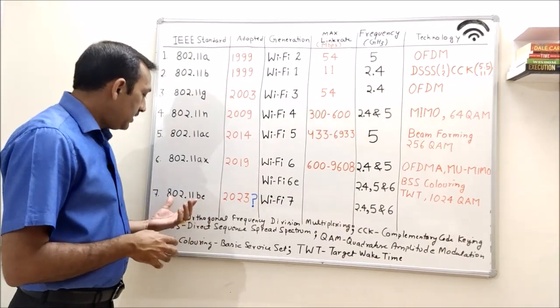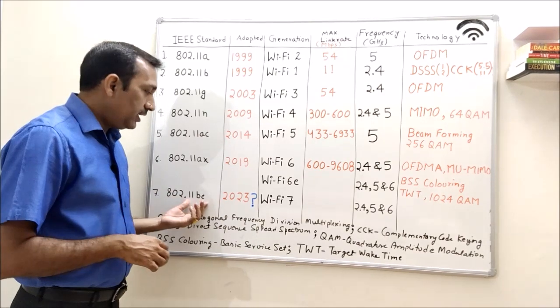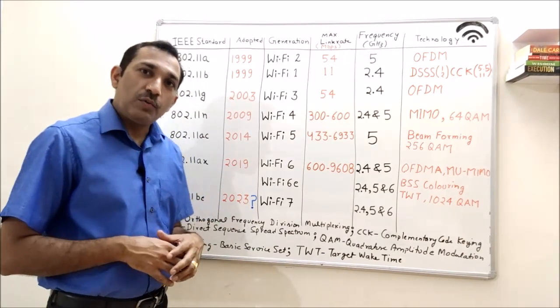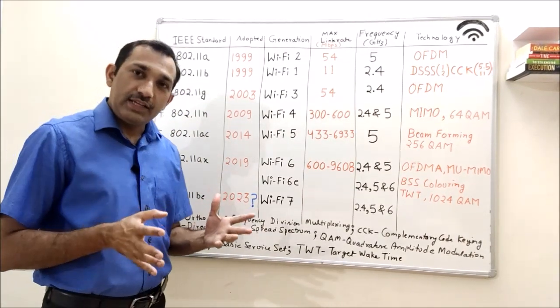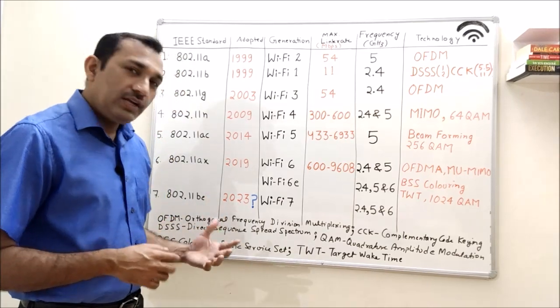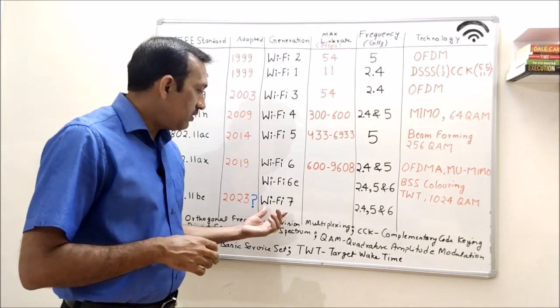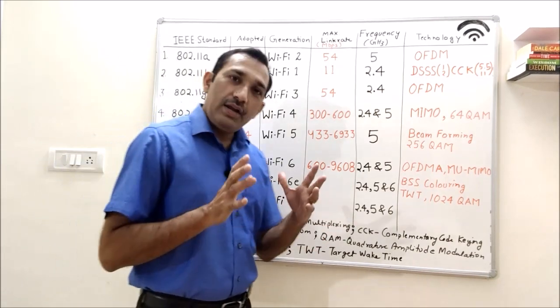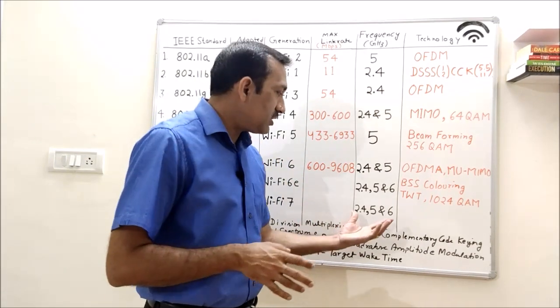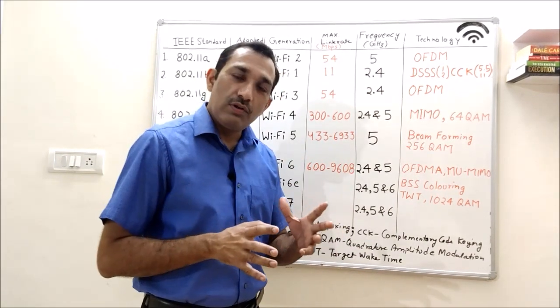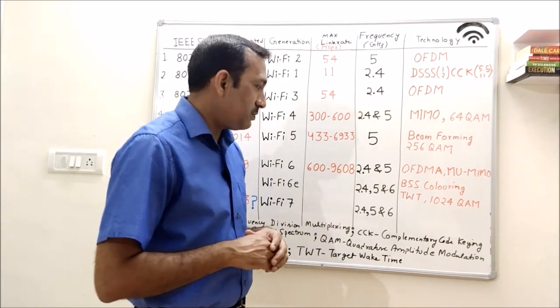Then the next one is 11BE, which is expected to be adopted in 2023, and it is supposed to be called Wi-Fi 7. And I am hoping that this will also support 2.4, 5, and 6 GHz bands.